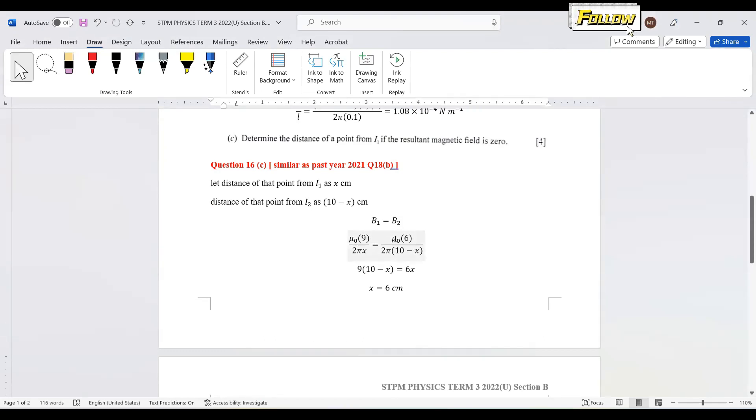We have i is 9 and 6 respectively, and the distance is x and 10 minus x for both B1 and B2. Solve these equations and you can obtain the distance as 6 centimeter. That's all for question 16. Thank you.